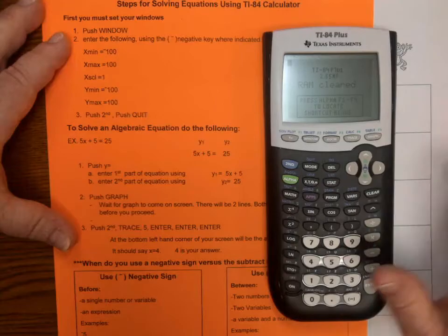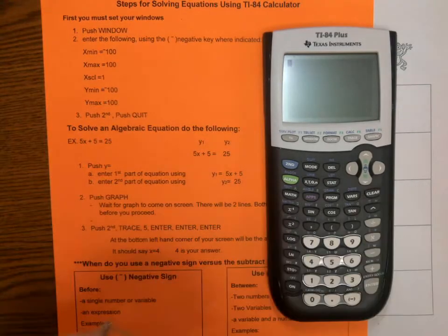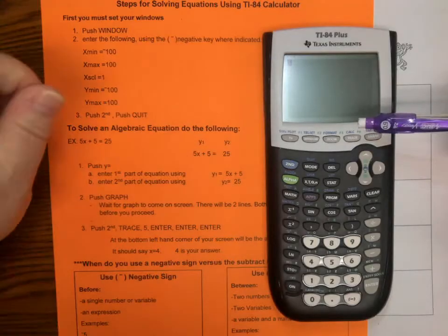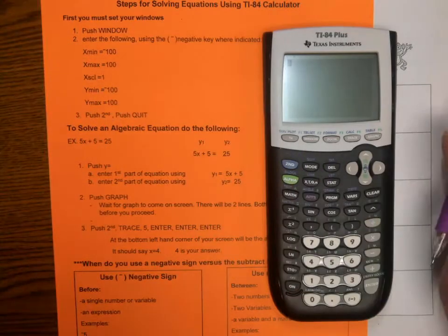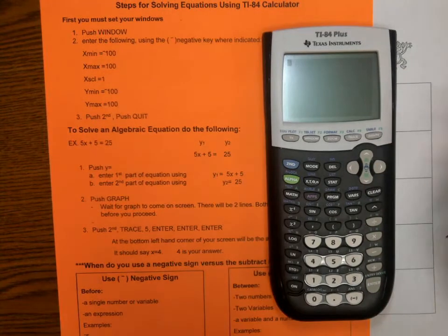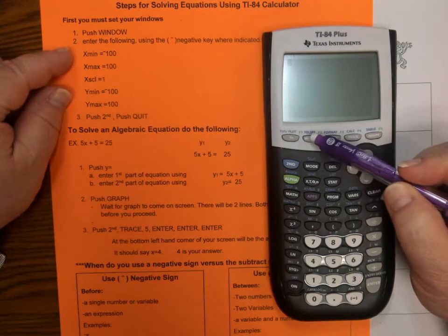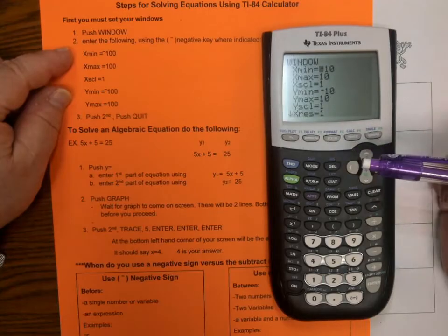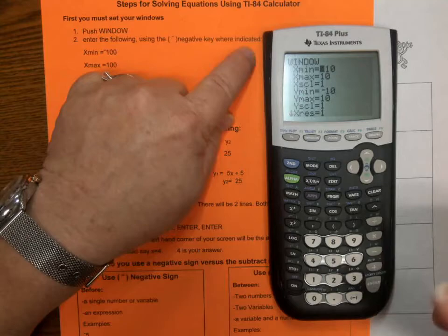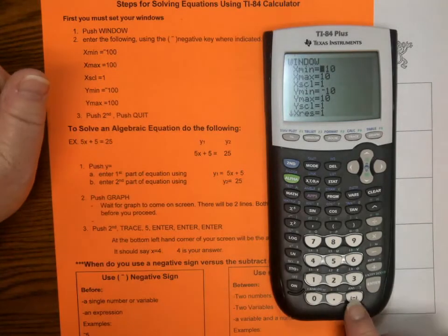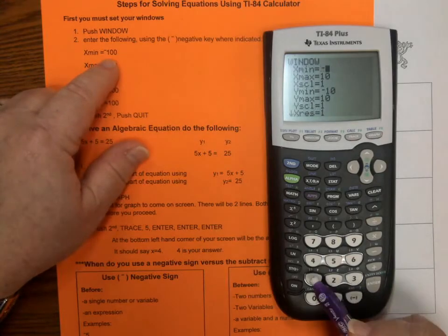Then, I am going to hit clear and I am going to push the window key. I'm going to use my pencil because then my fingers don't block things. If you see right here where it says table set, window is right here in this gray button. Then, it says enter the following using the negative key where indicated. We're not using the subtract key, we're using the negative key which is down here.